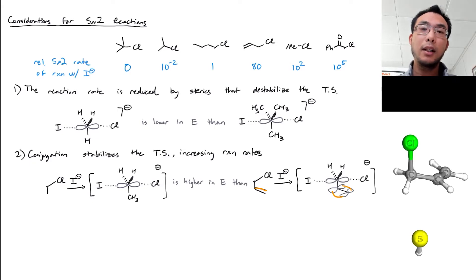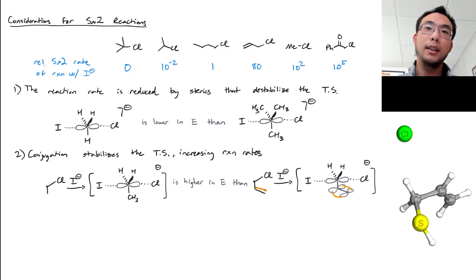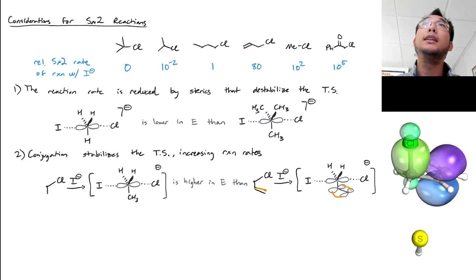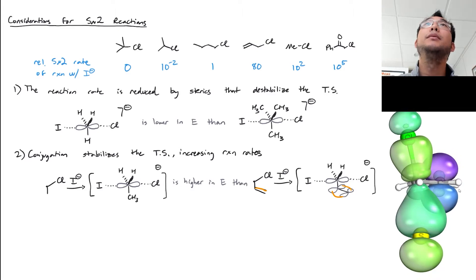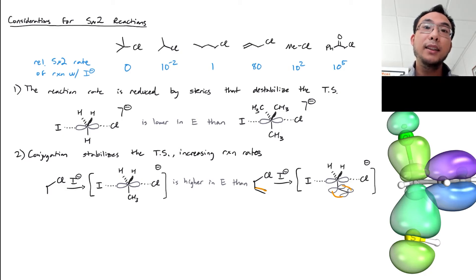An SN2 animation on an allyl chloride with an SH minus thiolate nucleophile shows the same SN2 process with some conformational change. With the orbitals shown — the sigma star of the electrophile, the pi bond of the allyl group, and the nucleophile's lone pair — at the transition state, the pi bond mixes with the planarized carbon. That orbital mixing and conjugation serves to stabilize the transition state, making it a faster SN2 reaction than without that stabilization.